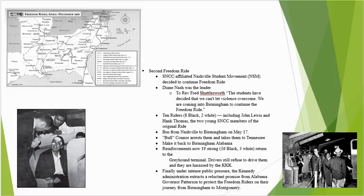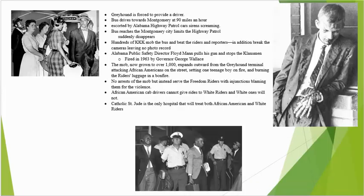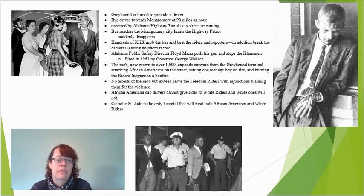When they arrived in Birmingham, Bull Connor arrested them and took them back to Tennessee. They made it back to Birmingham, Alabama, and reinforcements now were 19 strong — 16 blacks and three whites — returned to the Greyhound terminal. Drivers still refused to drive them and they were harassed at the terminal by the KKK. Finally, under intense public pressure, the Kennedy administration extracted a reluctant promise from Alabama Governor Patterson to protect the Freedom Riders on their journey from Birmingham to Montgomery. Greyhound was forced to provide a driver.